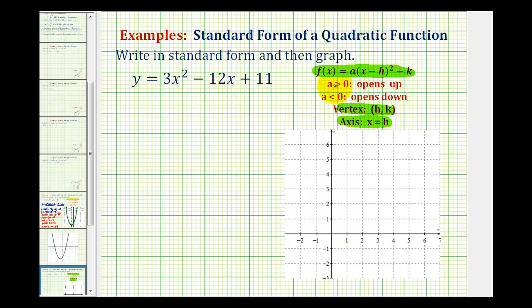It's also true if a is positive, the parabola opens up. And if a is negative, the parabola opens down. So the main thing to recognize here is that if we want to put this equation in this form, we have this quantity here, x minus h squared. So we'll have to create a perfect square trinomial.